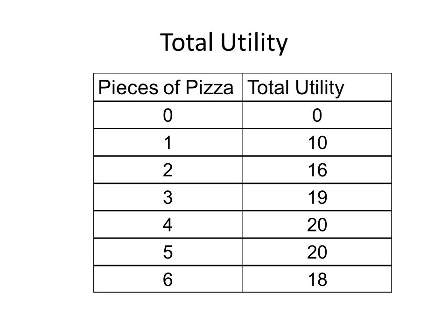Here is an example of utility. Notice that we have two columns: one is the number of pieces of pizza being consumed, and the other is the total amount of utility that we derive. As we consume more and more pieces of pizza, our utility actually increases, then reaches a maximum point, and then decreases.